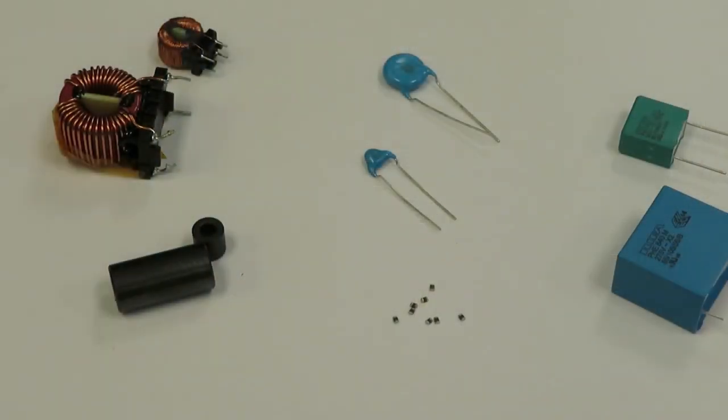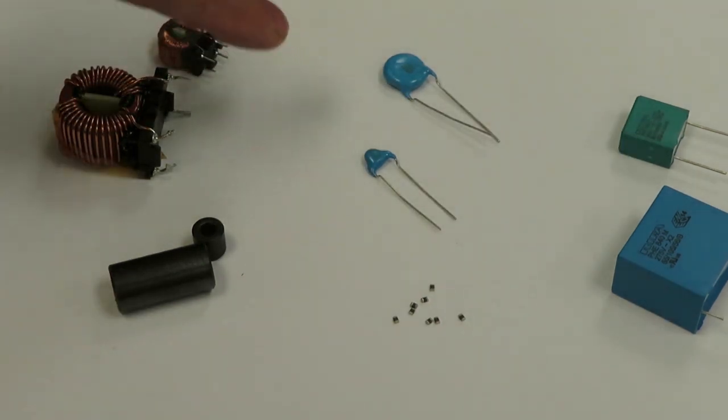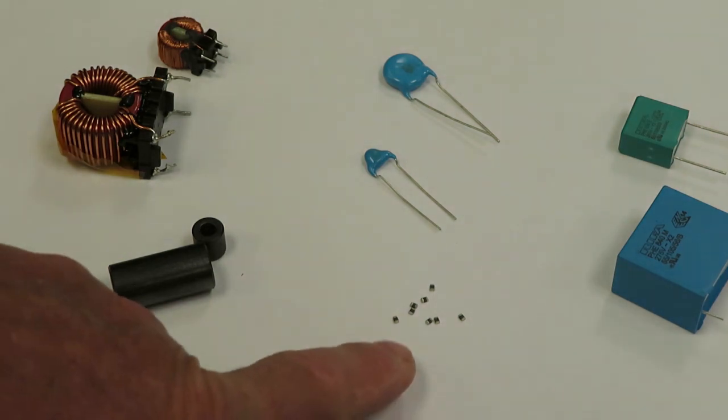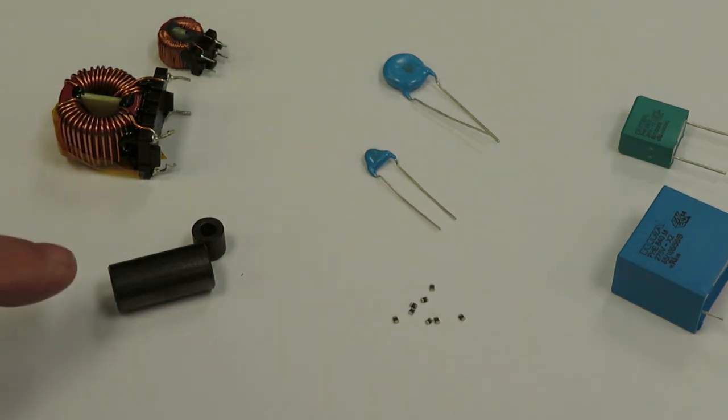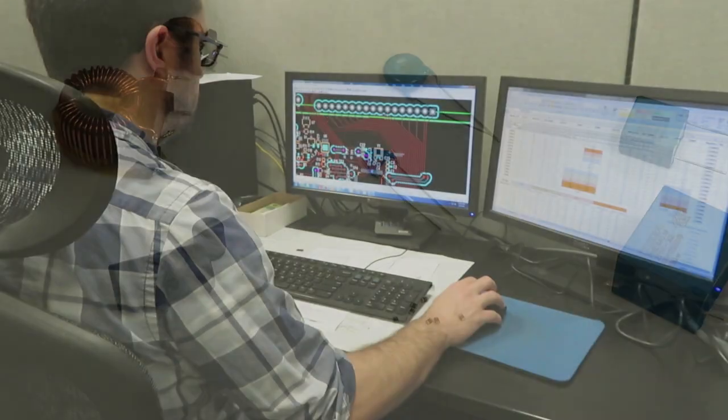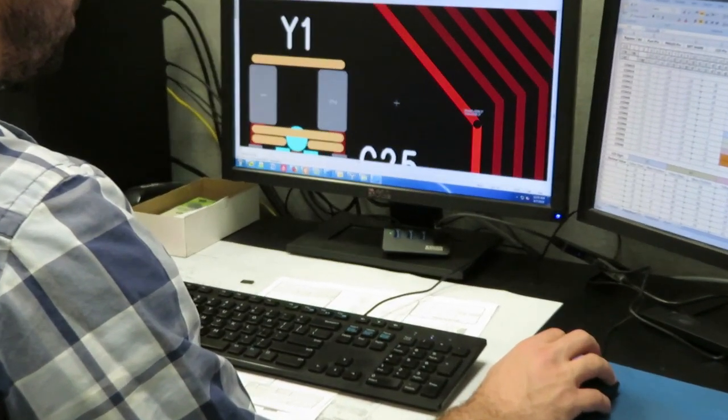So how do we limit EMI and ensure immunity? We use circuit design techniques involving safety capacitors like these Y-caps and X-caps, ferrite beads of different types and sizes, common mode chokes, careful routing of traces, and design techniques to control harmonics.